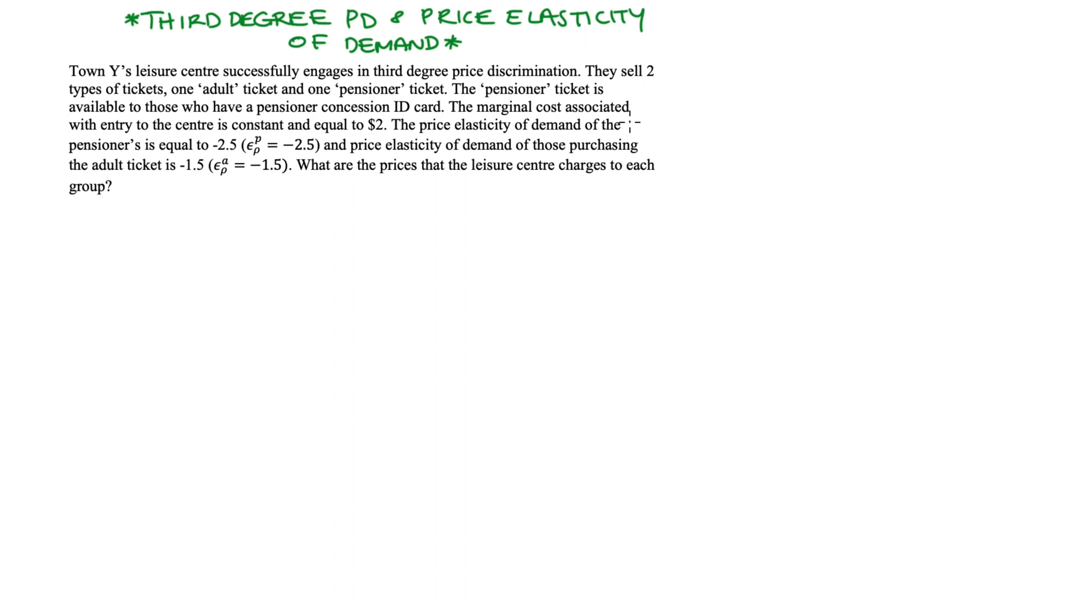The price elasticity of demand of the pensioner group is equal to negative 2.5. So here epsilon P is price elasticity of demand and superscript P means it belongs to the pensioners and that's equal to negative 2.5. And the price elasticity of demand for those purchasing the adult's ticket is negative 1.5. So that's epsilon P superscript A. We are asked what are the prices that the leisure centre charges to each group?